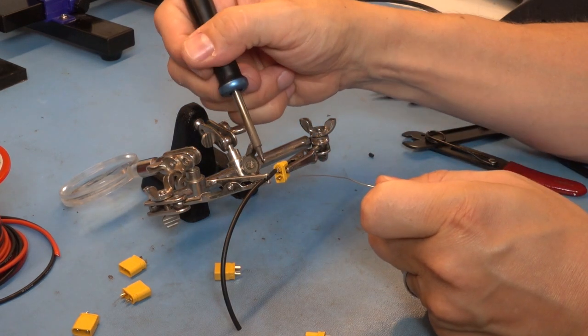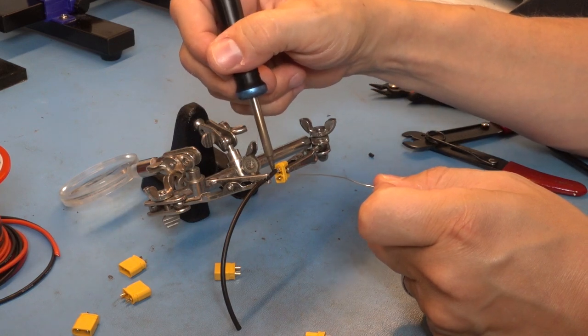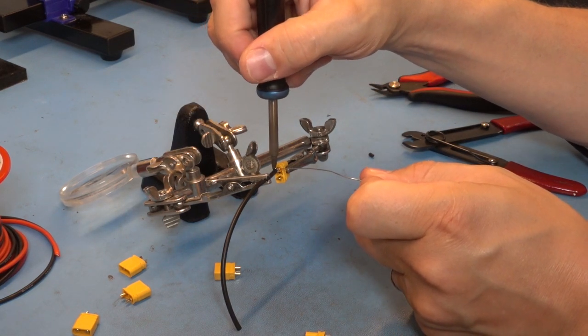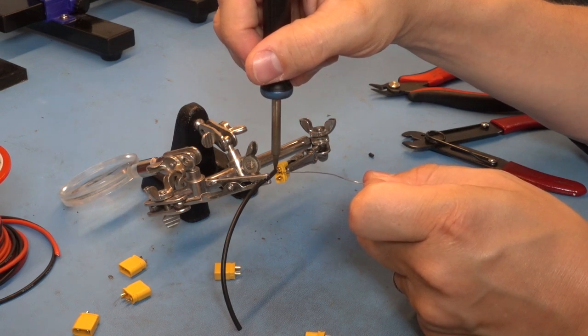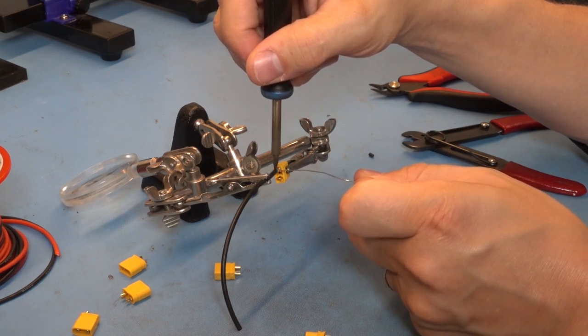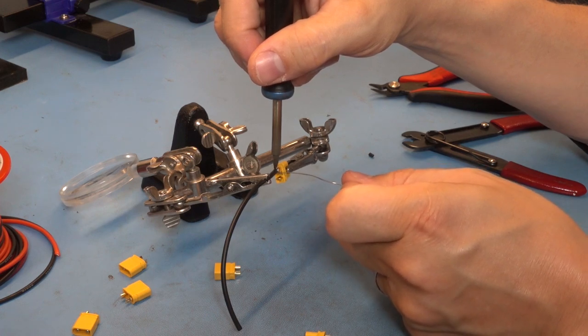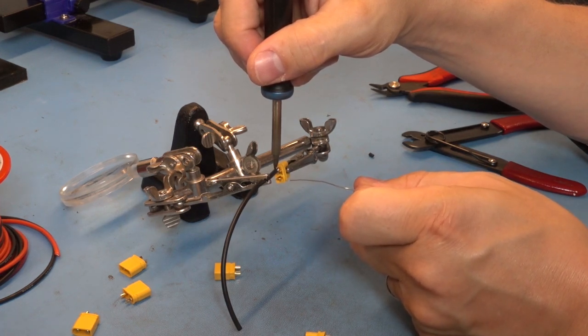I usually put the iron on one side with the solder until the wire and the connector are both reflowed. Then add a little bit of extra solder to get the flux from the solder.